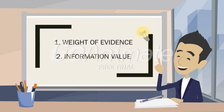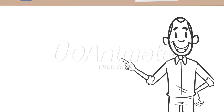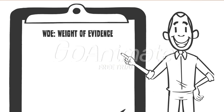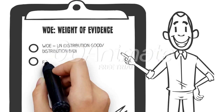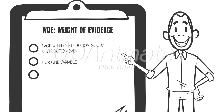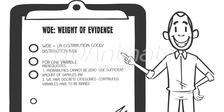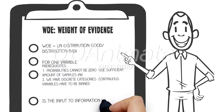Luckily, Pete remembers the weight of evidence and information value because he studied risk and fraud at IE. Pete remembers that the weight of evidence is an input for the information value and is calculated for just one predictive variable, which has to be categorical.